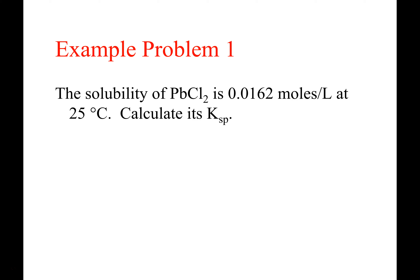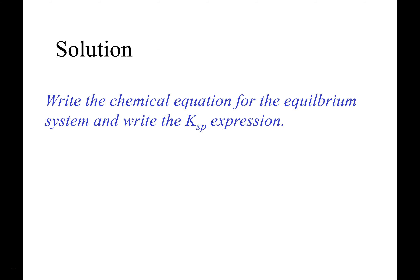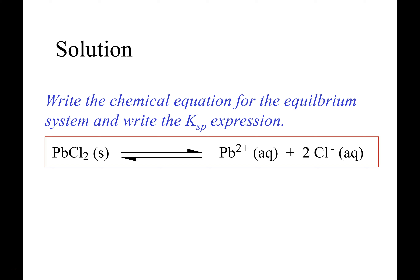Lead(II) chloride: a relatively insoluble salt. Temperature is given, and we need to find its Ksp. The solubility is given, so we're coming up with a value for the solubility product constant. The first thing to do is write the equilibrium: the solid lead(II) chloride ionizes or dissolves to give one Pb²⁺ and two Cl⁻ particles. That's important for writing the Ksp expression correctly.